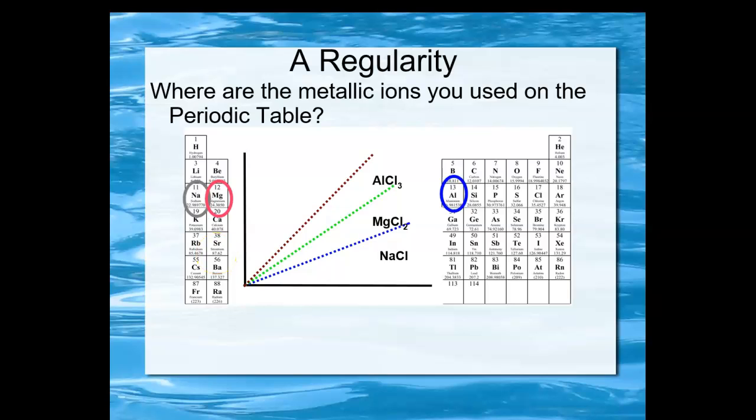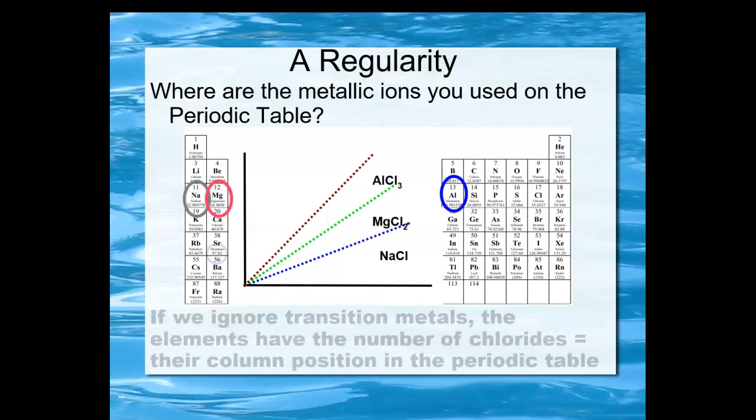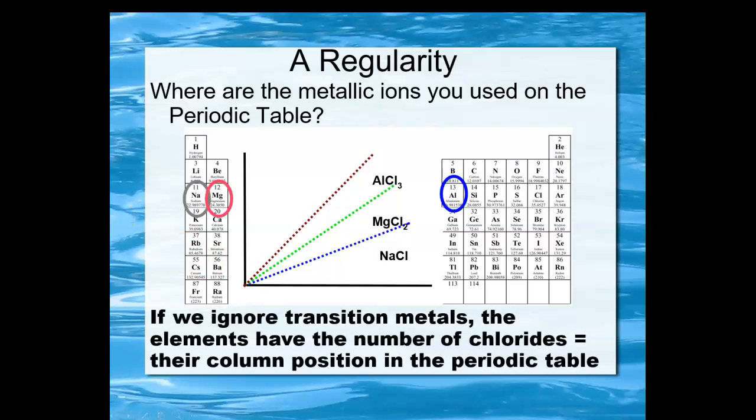Where are the metallic ions that you used found on the periodic table? You can see them right here. We have ignored the transition metals that you usually see here in the middle. These are the representative elements here on the left and on the right.